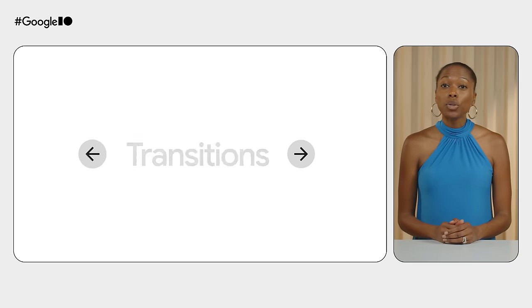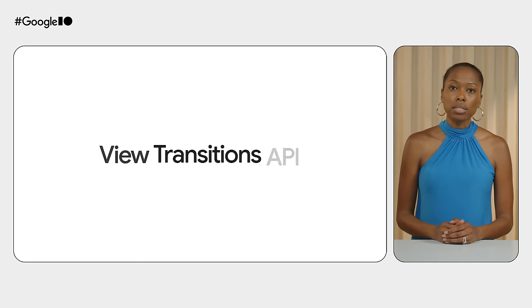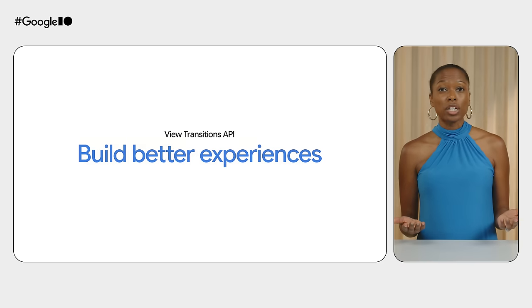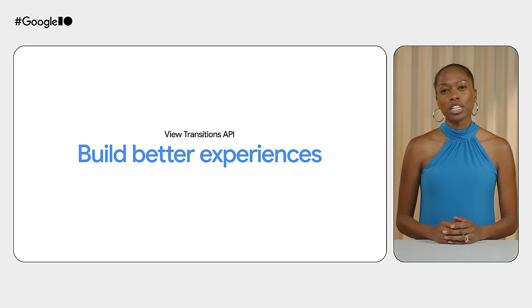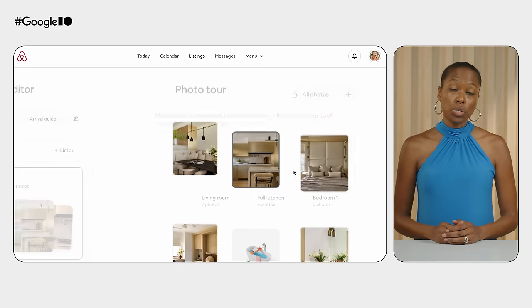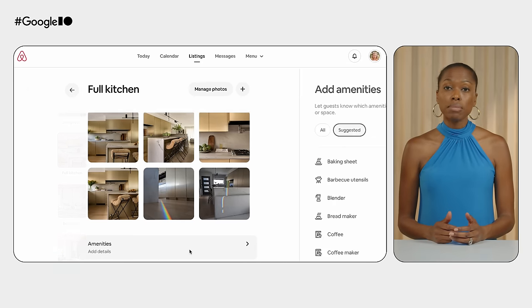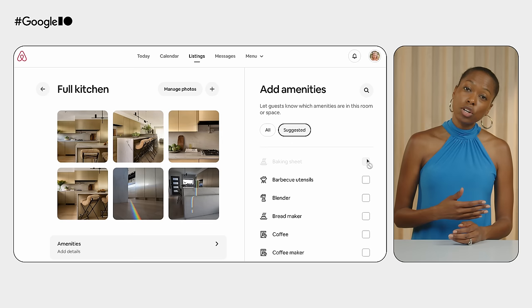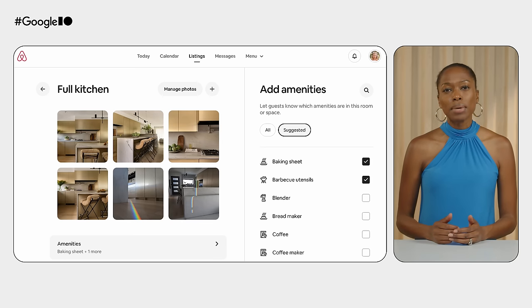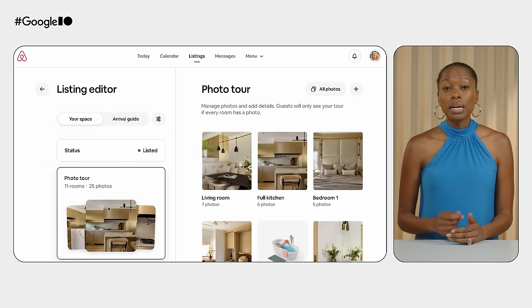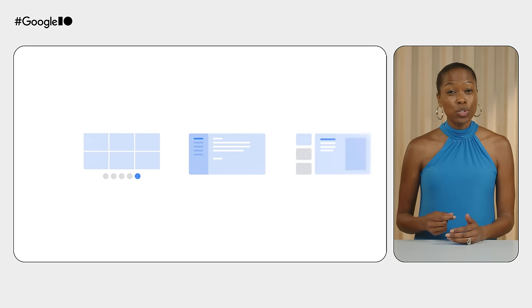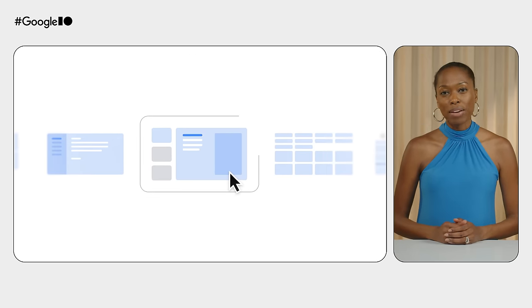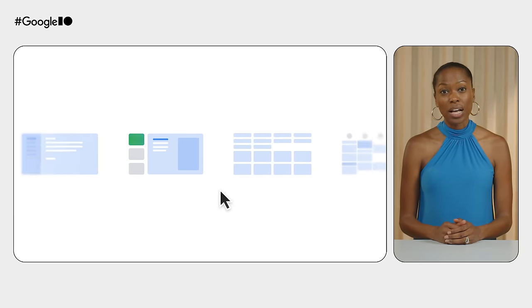Seamless visual transitions are important, both for this video and for your website. So we introduce the View Transitions API, letting you animate easily between page states. Whether you build a multi-page application or a single-page app, you'll be able to create a fluid navigation experience regardless of your site's architecture. As an early adopter, Airbnb created smooth and seamless navigations from the listing editor sidebar right into editing photos and adding amenities, all within a fluid user flow. Combine the Speculation Rules and View Transitions APIs to truly improve the web navigation experience for developers and users alike.